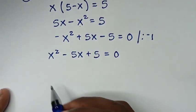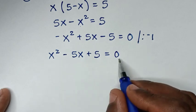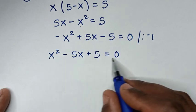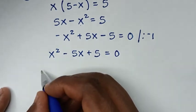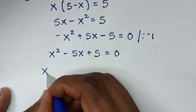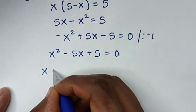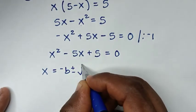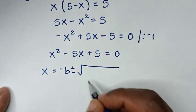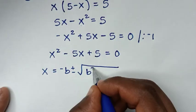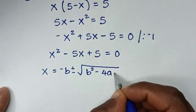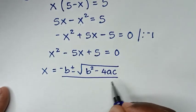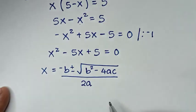Now we solve this quadratic equation using the quadratic formula: x equals negative b plus or minus square root of b squared minus 4ac, all over 2a.